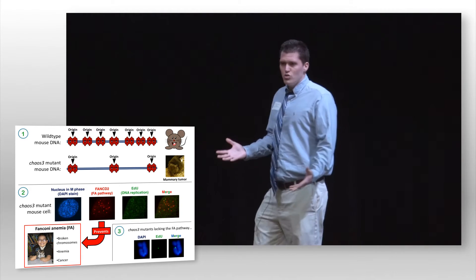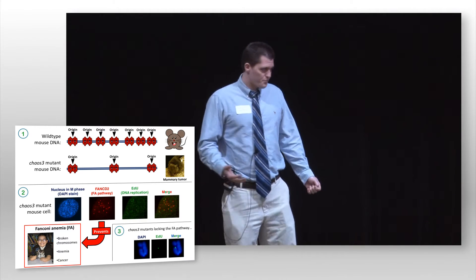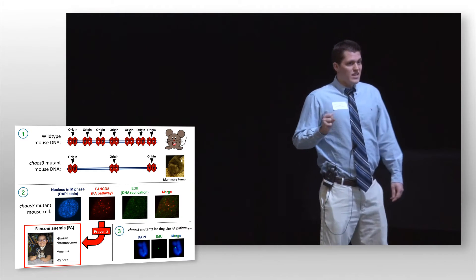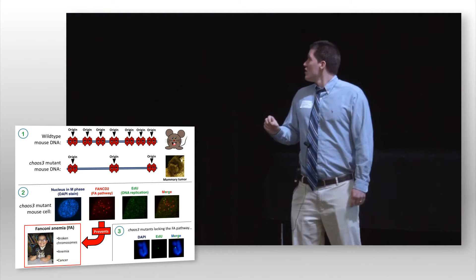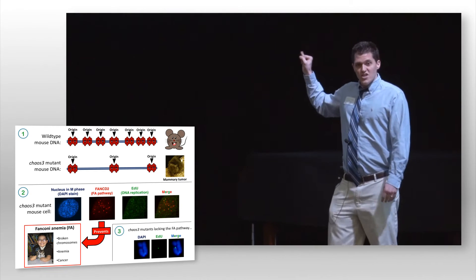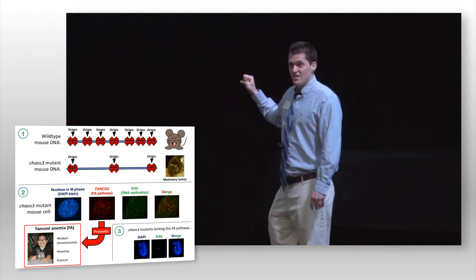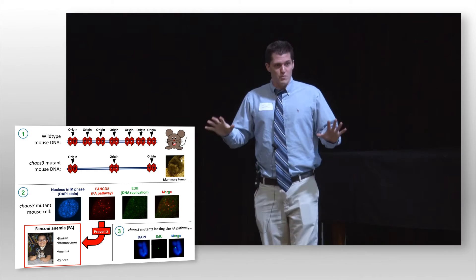So what is FANC-D2 doing in CHAOS-3 cells? The surprising answer came when an EDU labeling experiment revealed that DNA replication was still going on right at these FANC-D2 sites in M phase—super late replication.